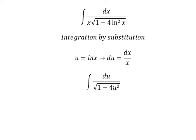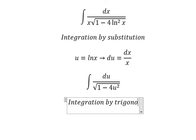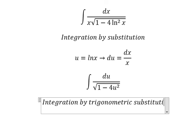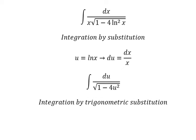Next we need to use integration by trigonometric substitution. So we put u equals 1/2 sine t.